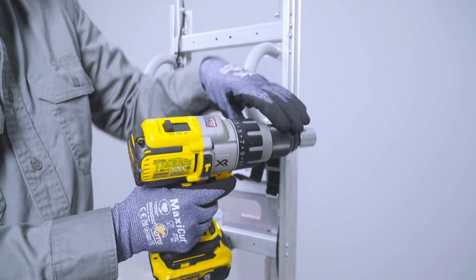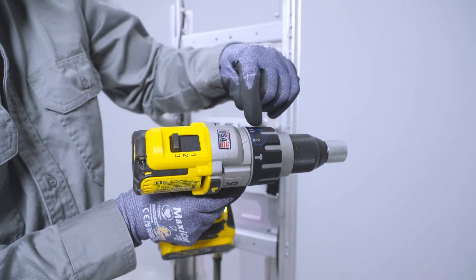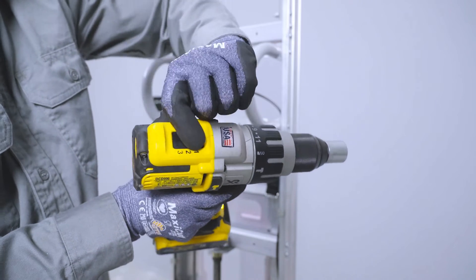The settings on the drill will need to be adjusted as follows. The clutch should be set to one level below the maximum setting, and the gear is set to the lowest option.